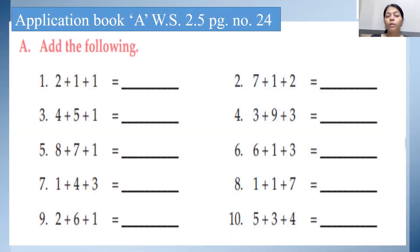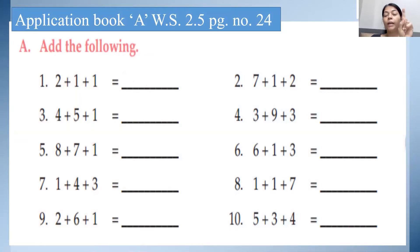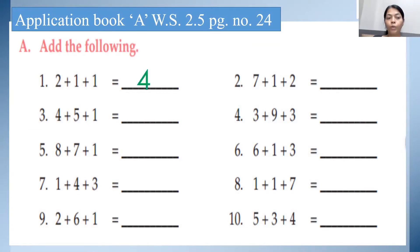Over here you can see three number additions are given. Let's start. See the first one: 2 plus 1 plus 1. How are you going to add it? Keep 2 in the mind, raise one finger and count after 2: 3. Then 3 in the mind, again one finger, and after 3 the next number is 4. So 2 plus 1 plus 1, the answer is 4.